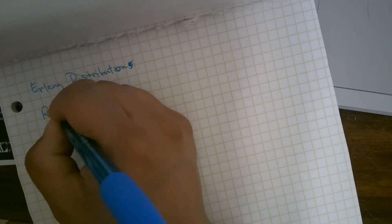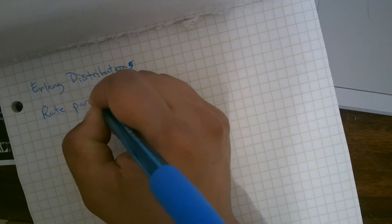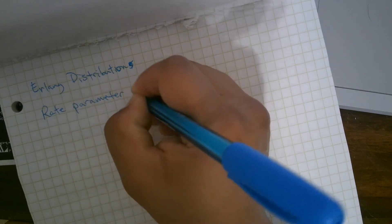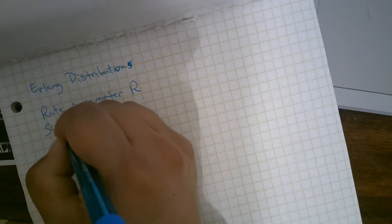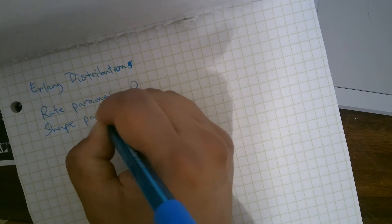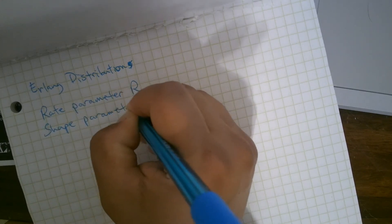And there's a couple things. There's a rate parameter, R, and a shape parameter, K. K is a positive integer.